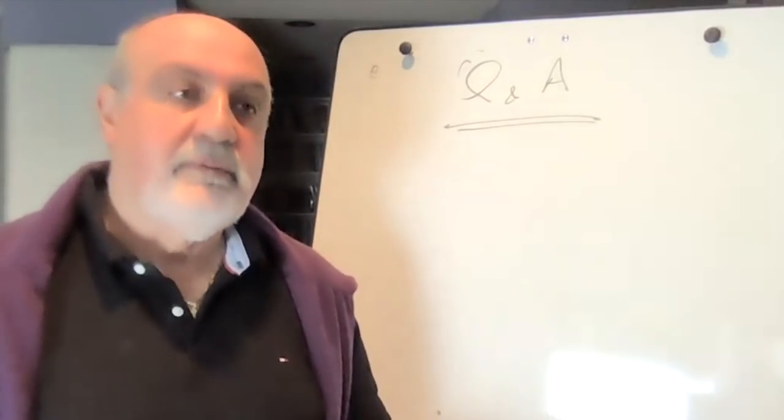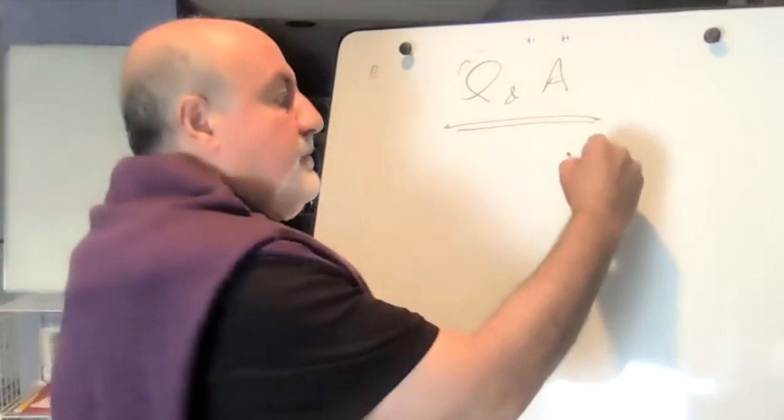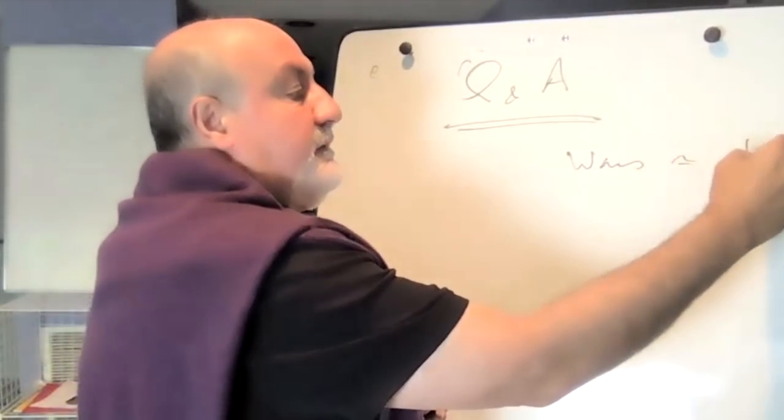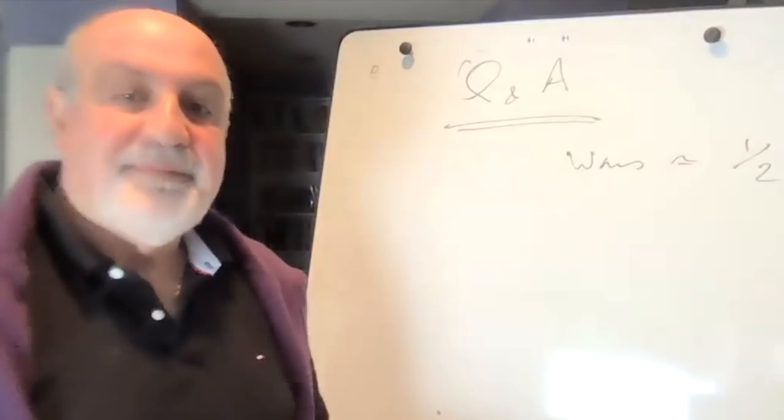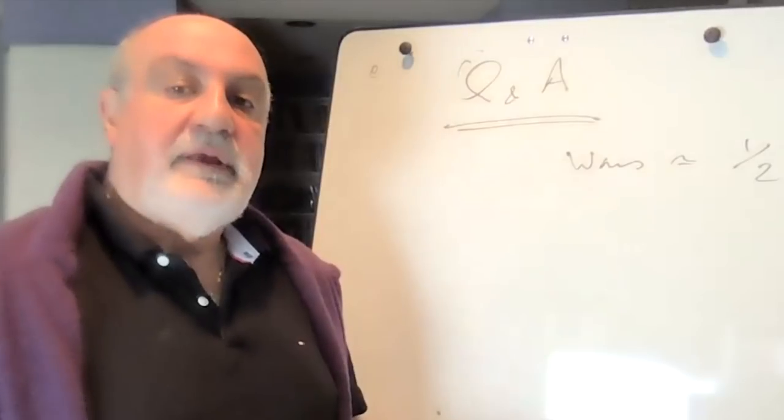You remember we spoke about alphas. Wars have an alpha close to one-half. The lower the alpha, the fatter the tail.